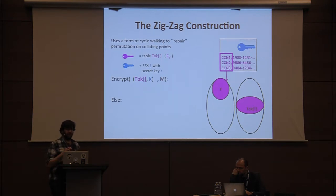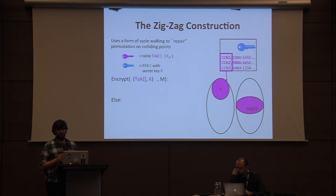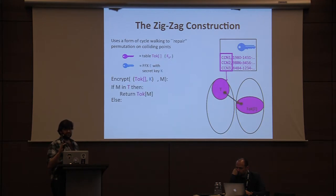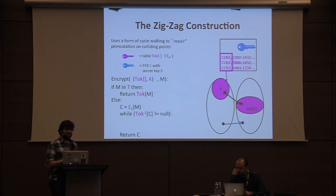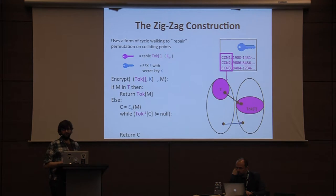This is the zigzag construction. The idea is to use a modified form of cycle walking to repair the permutation on the points that collide. There are two easy cases and one more difficult case. The first easy case: if the point is in set T, return its value from the token table. The second easy case: if the point is not in T and its image under the new cipher E doesn't collide with any images of points in T, just return it.